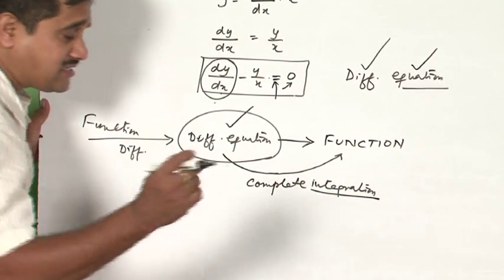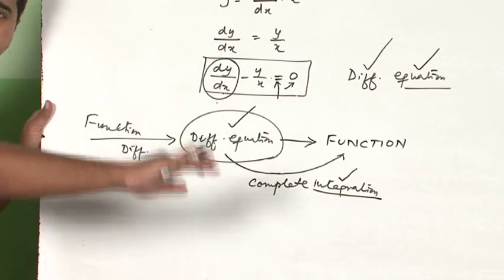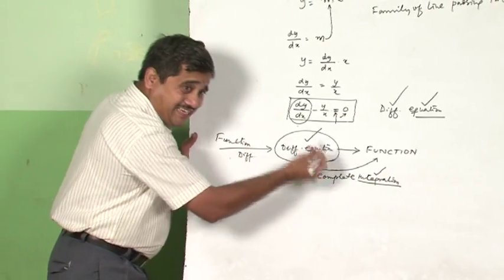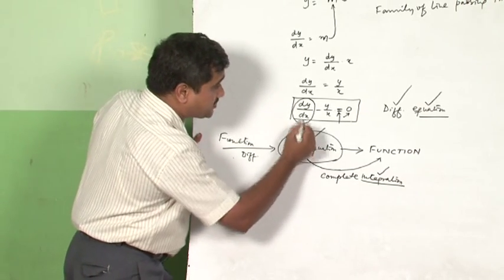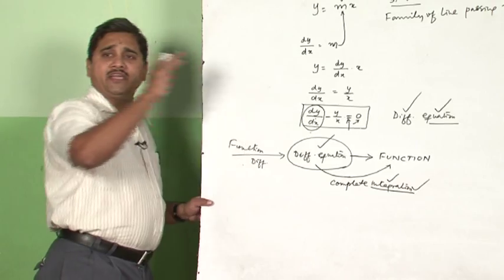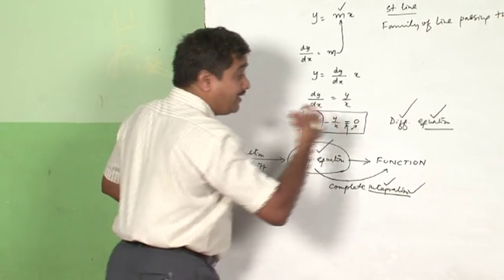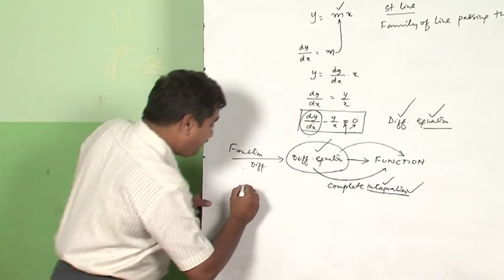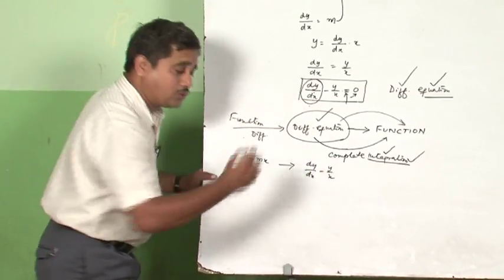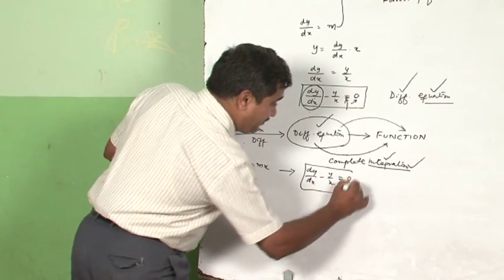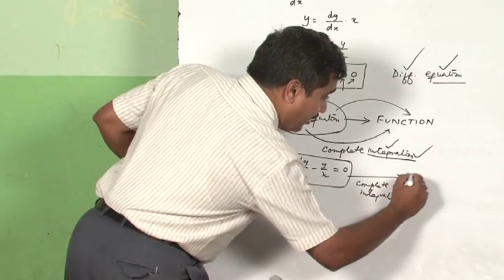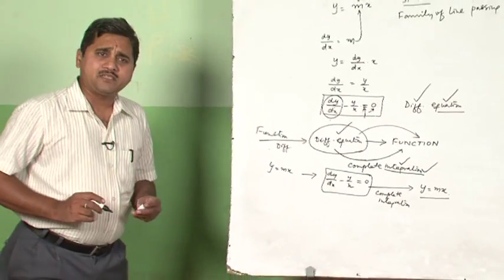Integration is a word your teacher must have already taught you — it means the anti-derivative process. It is called anti-derivative because when a function is differentiated you get a derivative, and integration reverses that. So we take integration to solve the differential equation and thereby reach back to the original function. If y = mx is differentiated to get dy/dx − y/x = 0, from here if I do complete integration, I should get y = mx back.